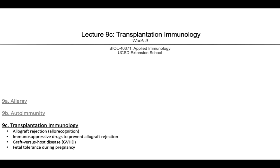Today, we will start by learning about the mechanisms of immune rejection when tissue from a genetically distinct individual or donor is grafted into a recipient. This is called allograft rejection and is based on recognition of something called alloantigens. We will also cover some immunosuppressive medications that are used to prevent allograft rejection, and lastly, we will talk about graft versus host disease and fetal tolerance.